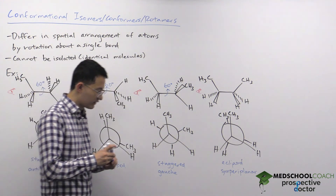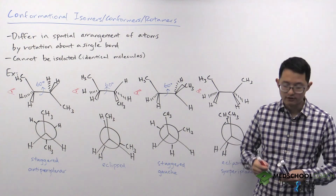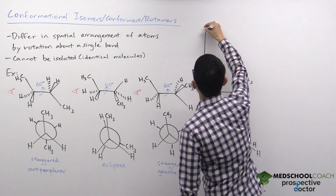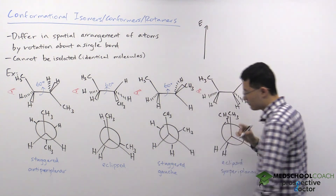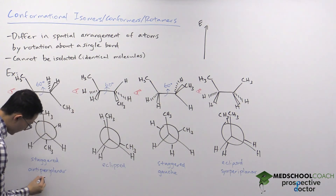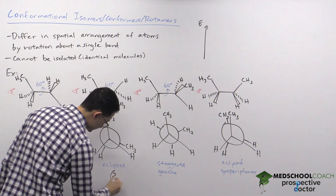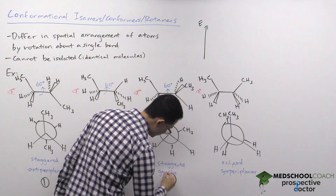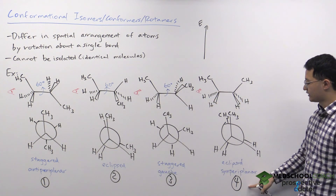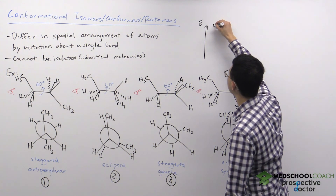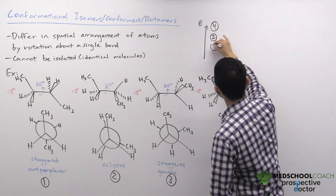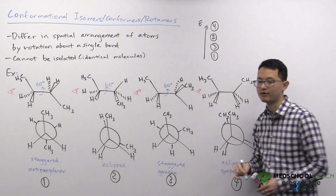To summarize the stabilities of these molecules, we can draw an energy diagram. Numbering the conformations one through four from left to right, the highest in energy is number four (syn eclipsed), followed by number two (the other eclipsed), then number three (gauche staggered), and the lowest in energy and most stable is number one (anti staggered).